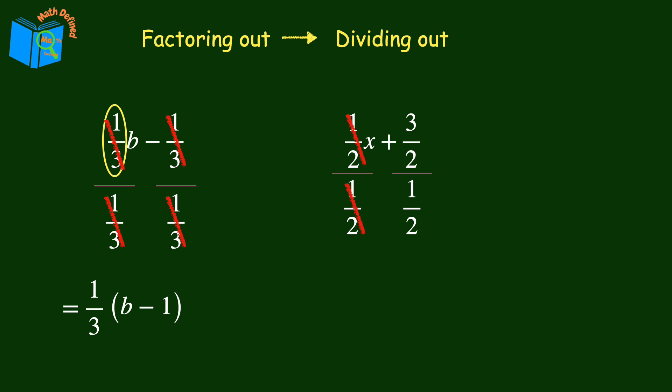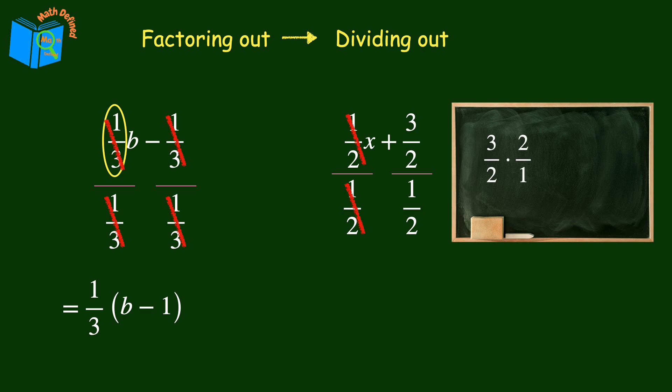Remember, to divide a fraction by another fraction, you multiply by the reciprocal of the divisor, which is the second fraction. So we'll multiply 3 over 2 times 2 over 1. Now we can see that these 2's cancel each other out, and then multiplying the numerators, 3 times 1 is 3, and then the denominators, 1 times 1 is 1. And we'll simplify 3 over 1 to just 3.